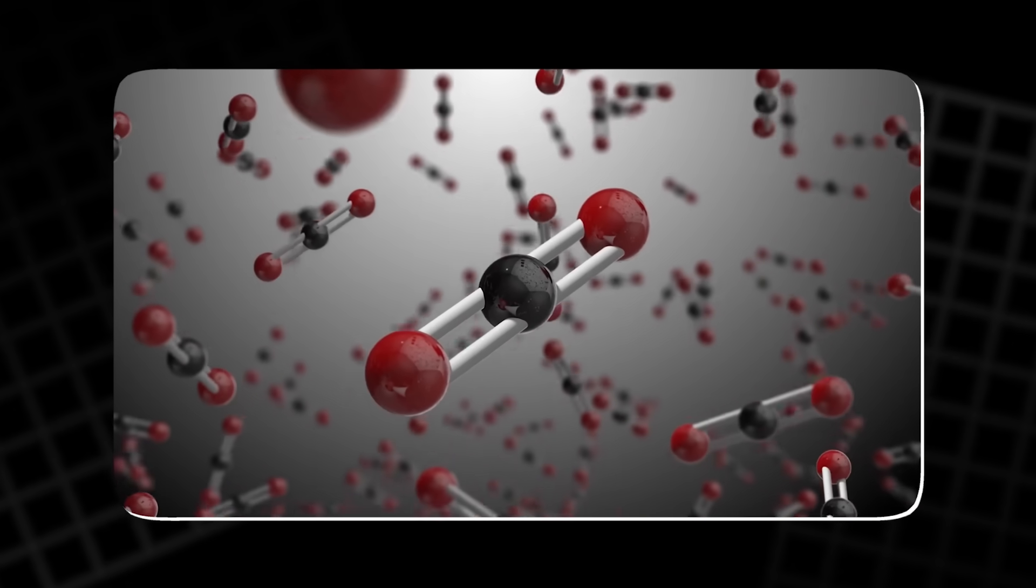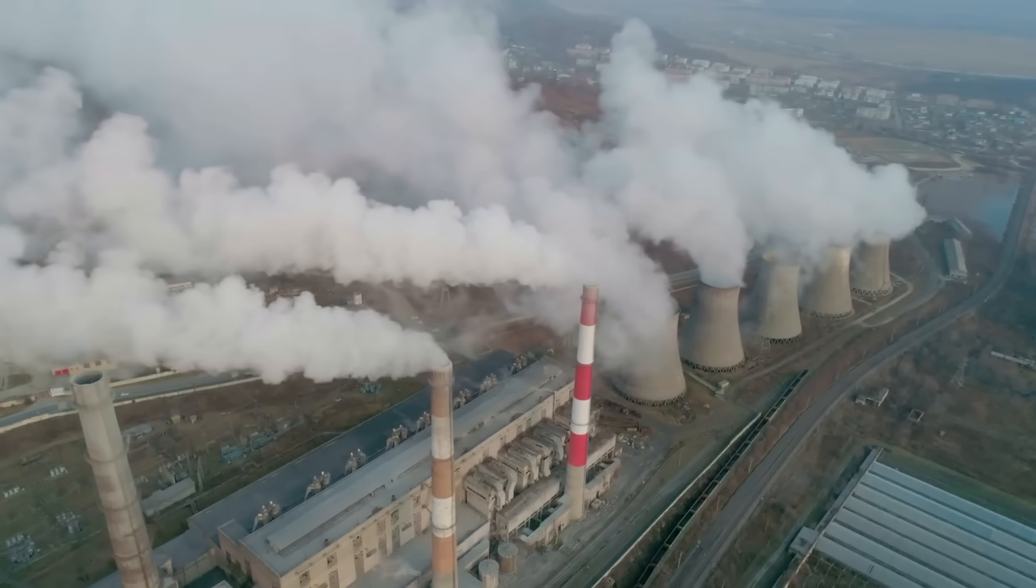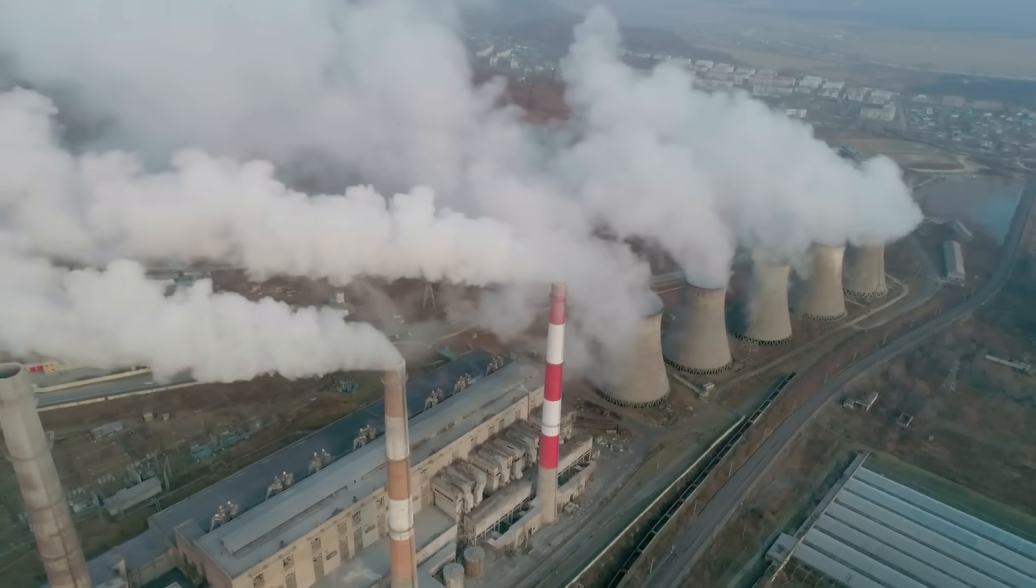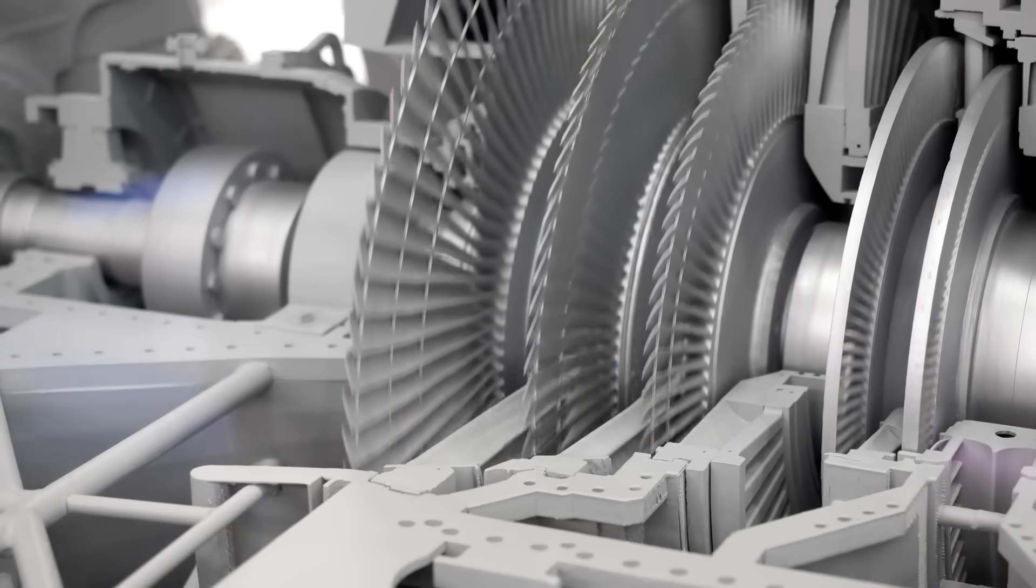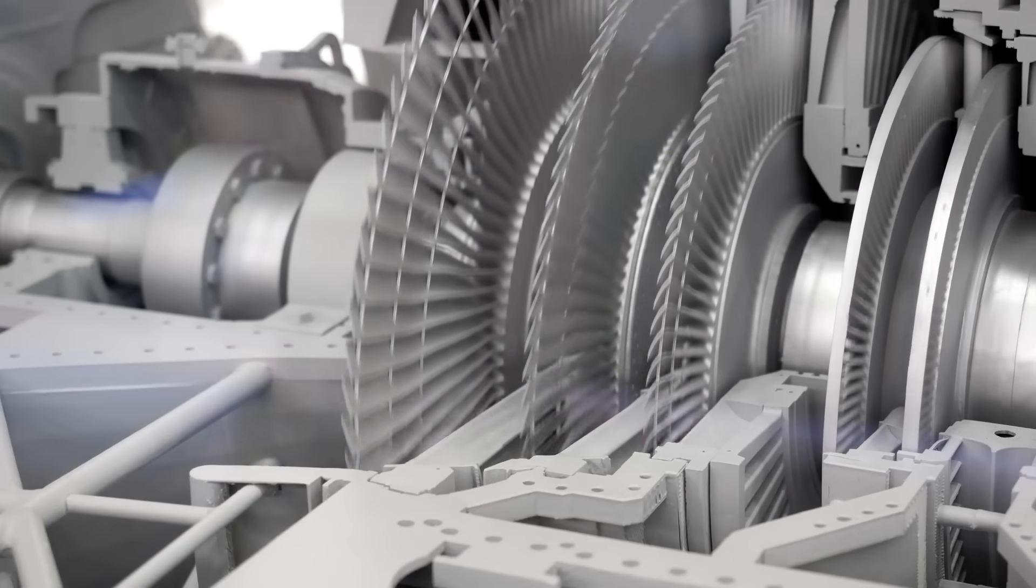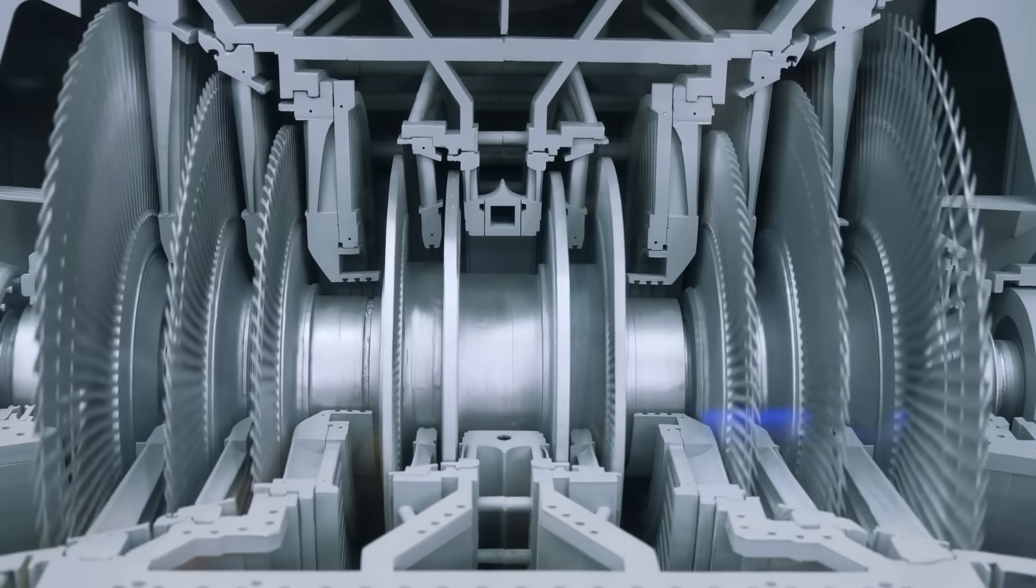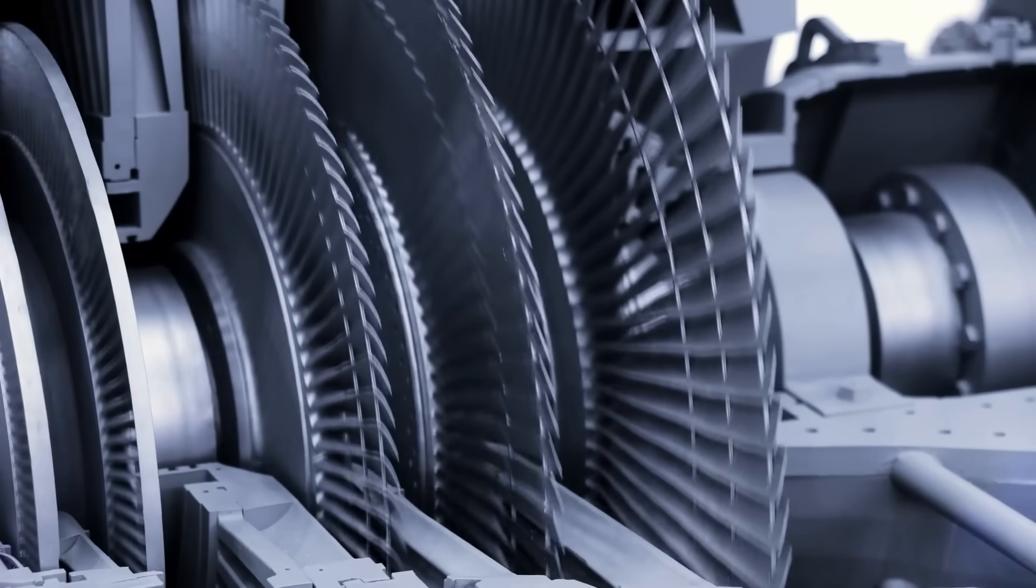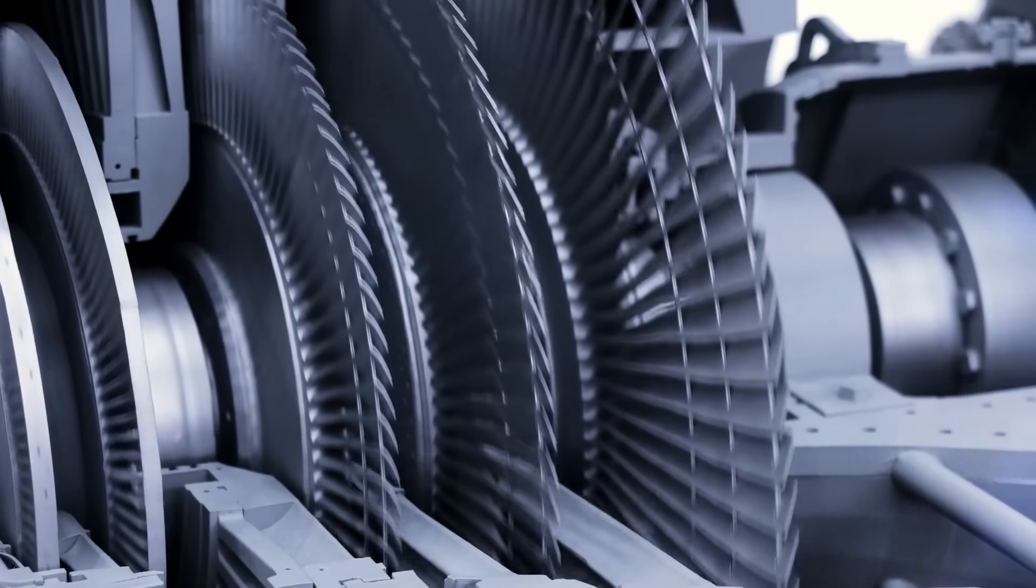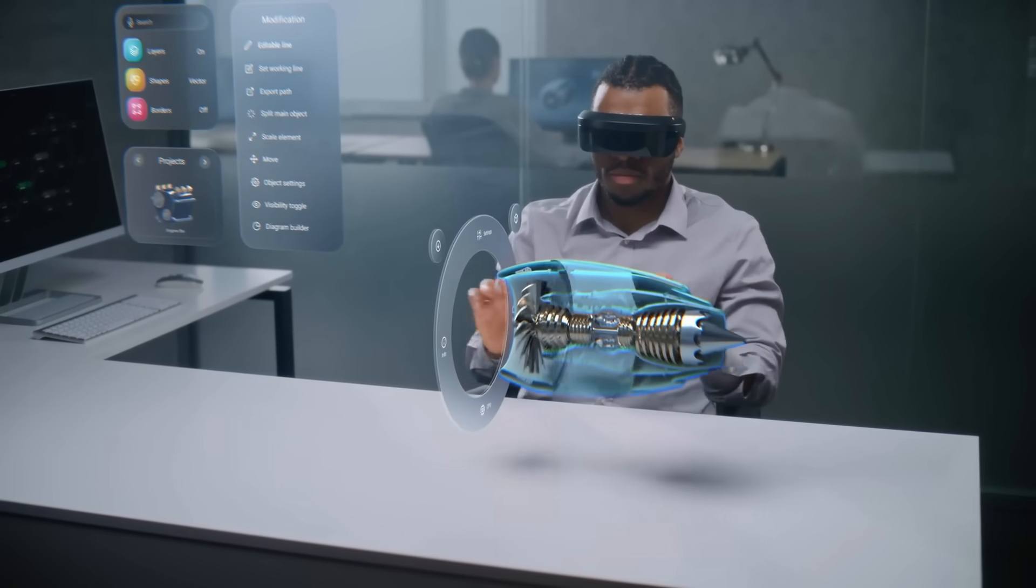This ghost-like behavior is not just a curiosity. It is the very feature that makes supercritical carbon dioxide valuable. Its density allows it to carry huge amounts of energy in motion. Its fluidity allows it to flow smoothly through the blades of a turbine. And its stability, remaining in this in-between state without phase changes, means less energy is lost in the process.